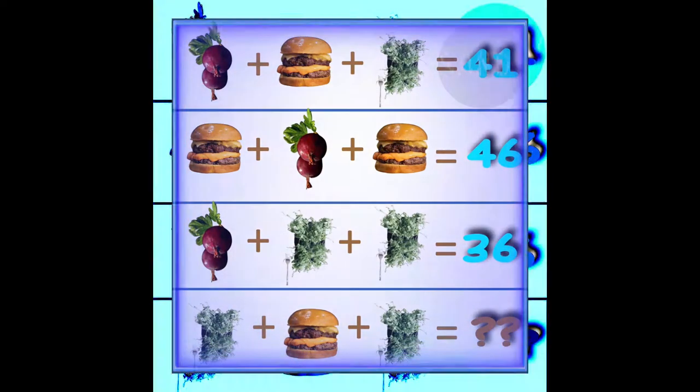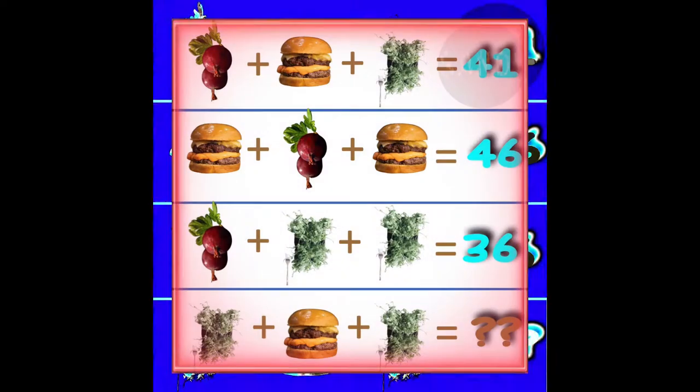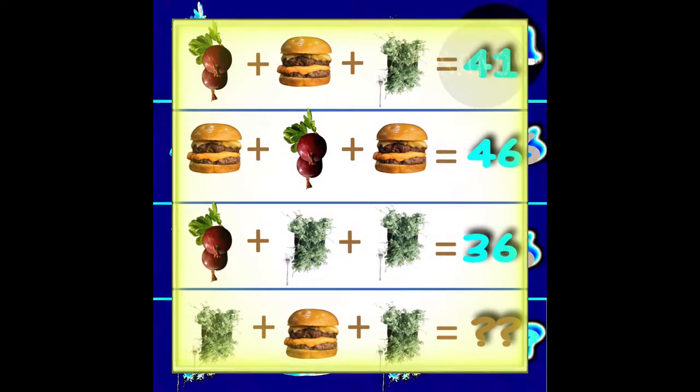Proverbs 19:14 - House and riches are the inheritance of fathers, and a prudent wife is from the Lord.